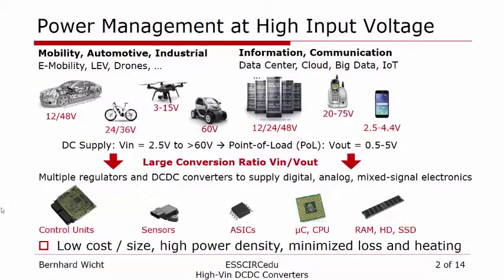There are many very interesting and important applications that have relatively high input voltages — in the area of mobility, automotive, and industrial, as shown here on the left. There is also the trend for increasing voltages in communications and IT servers. Particular examples are the automotive 48-volt board net, which comes in hybrid and electric cars, as well as IT servers where the intermediate voltage increases to 48 volts.